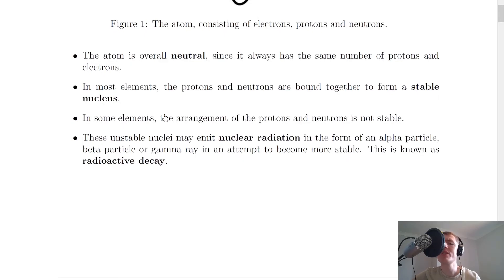It then says here that in most elements the protons and neutrons are bound together to form a stable nucleus. In some elements however the arrangement of the protons and neutrons is not stable and this is what leads to the emission of nuclear radiation. So how does this work?